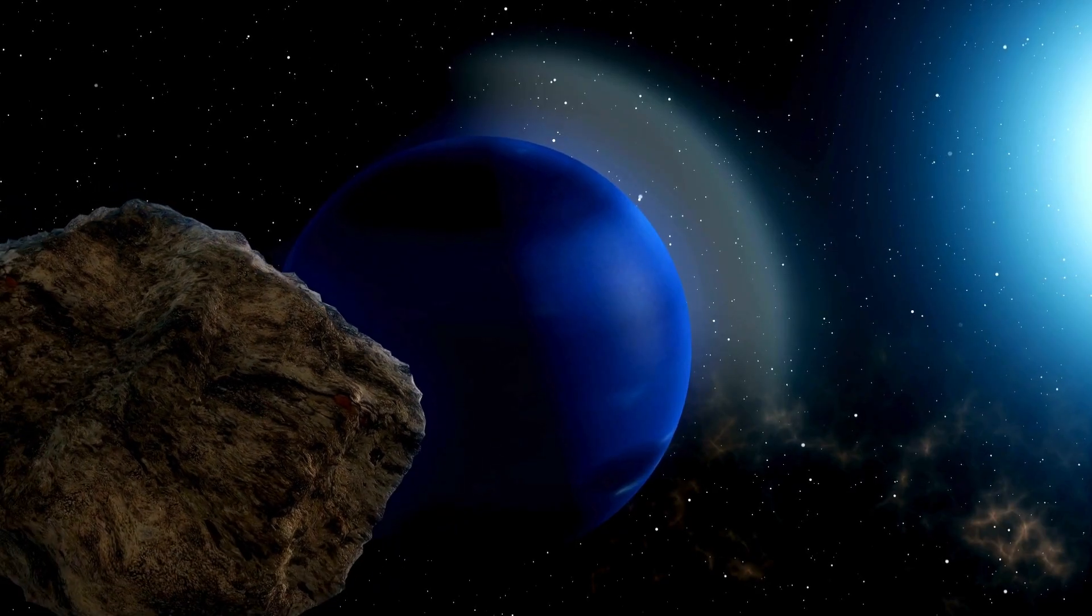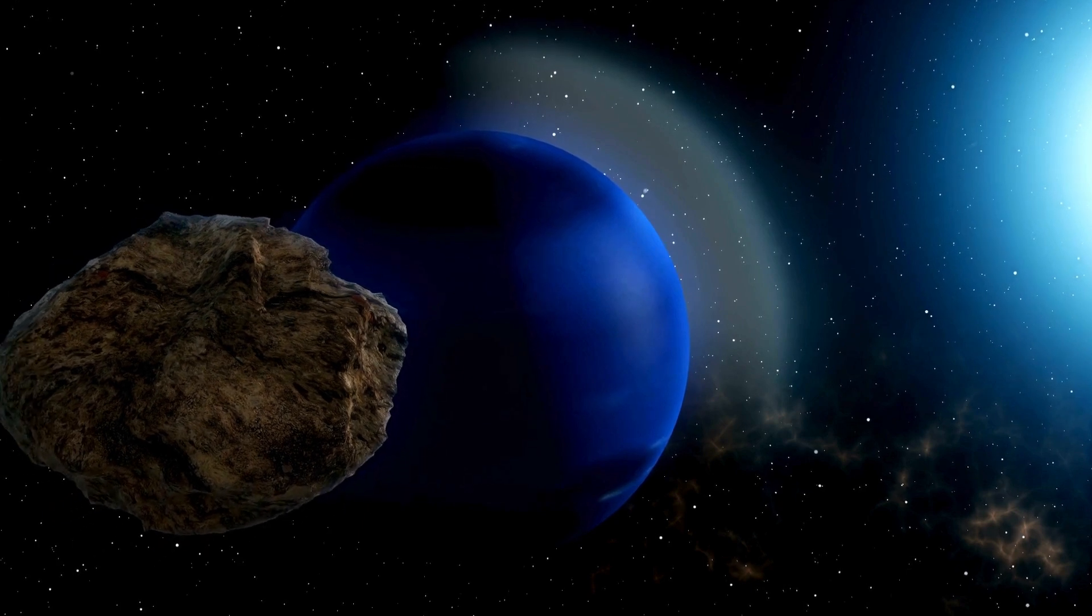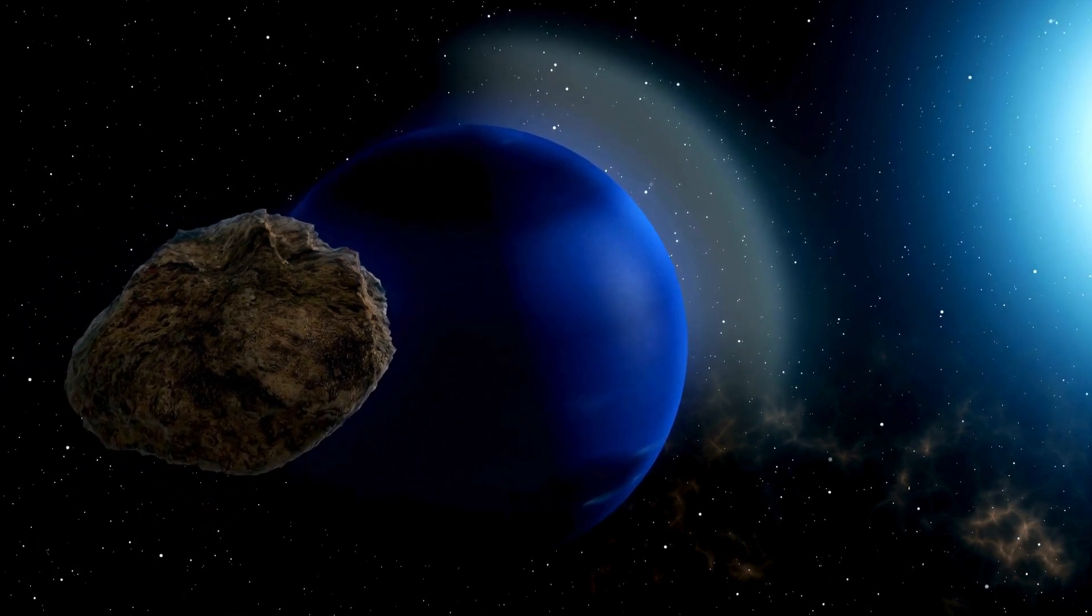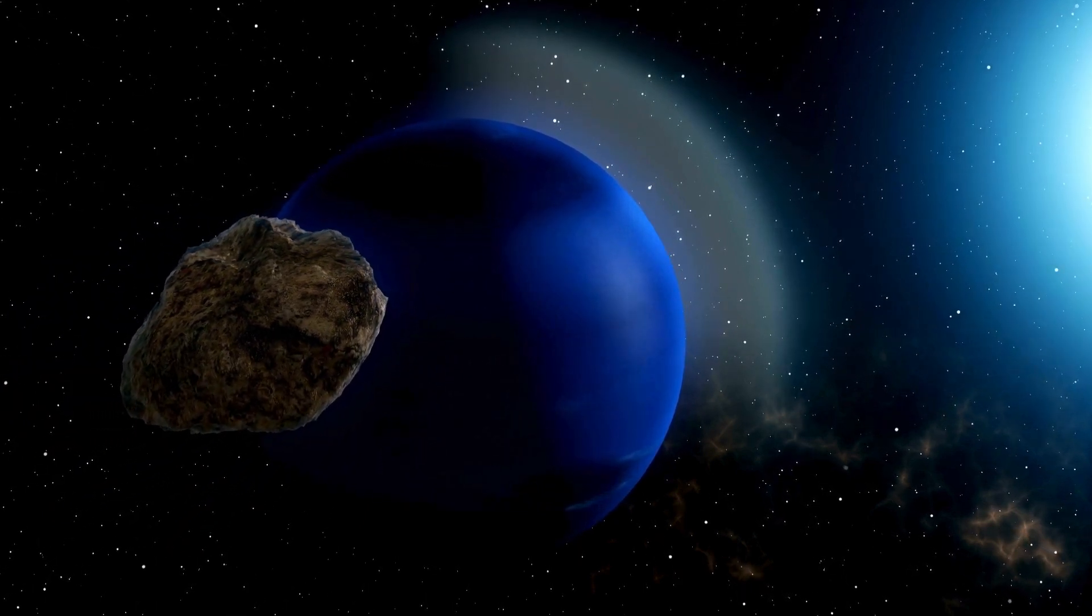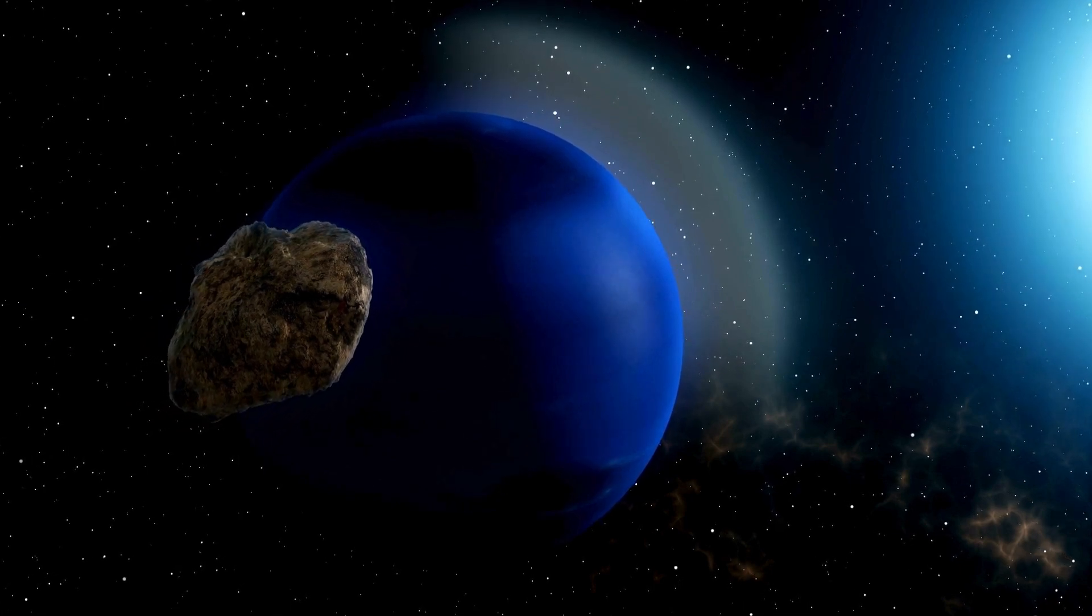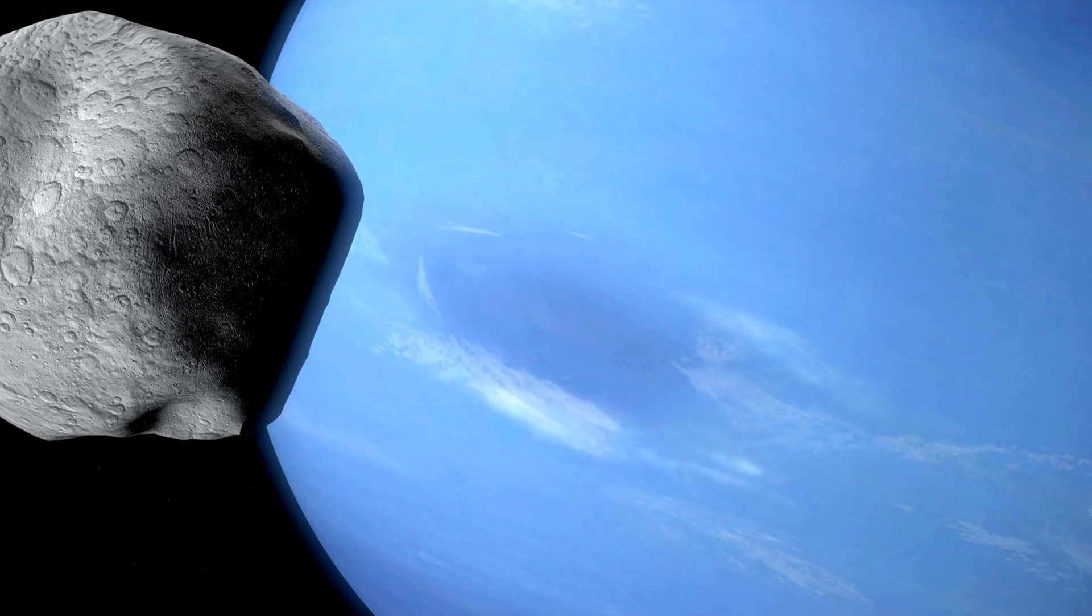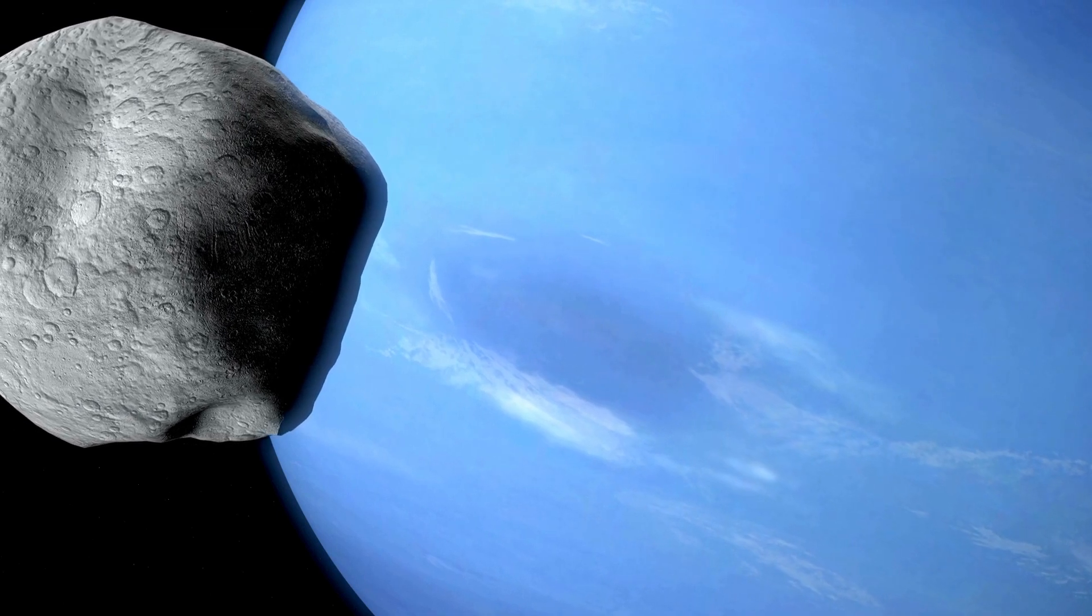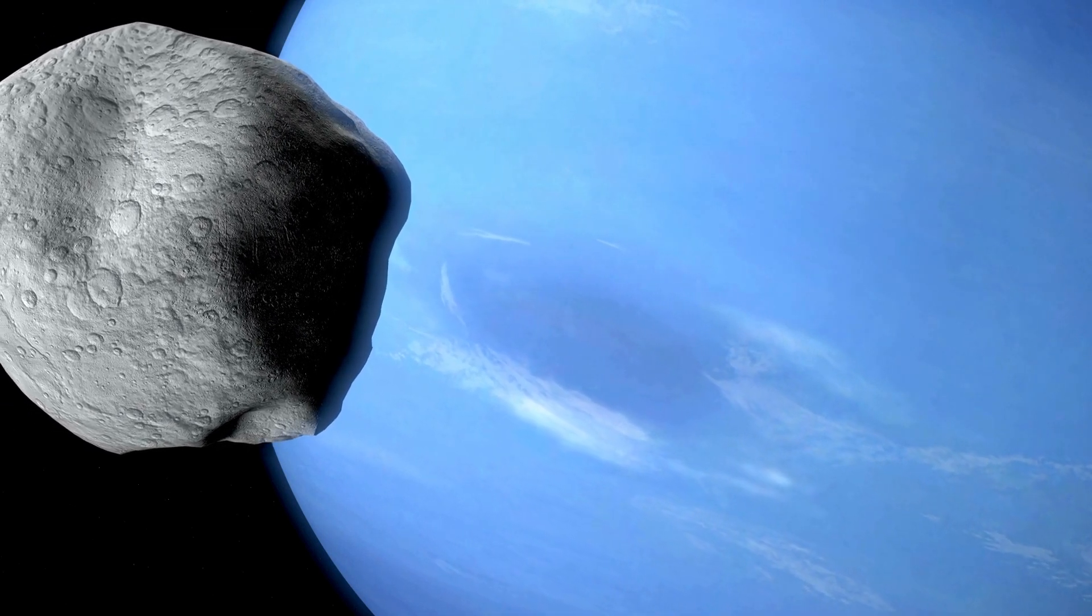Pluto's orbit around the Sun is distinctive primarily because it deviates significantly from the almost circular orbits of the other planets. Its elliptical orbit stretches far from the Sun, and it remains incomplete even after decades of observation, having only partially completed a full orbit since its discovery in 1930.